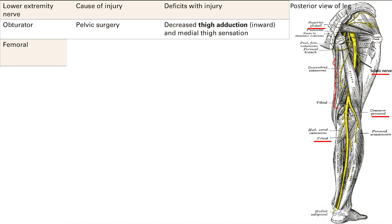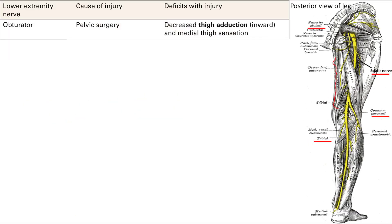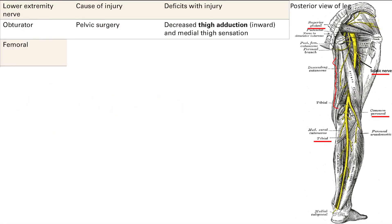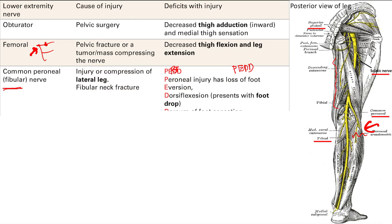The femoral nerve can be damaged by a pelvic fracture. Deficits: remember that big F — thigh flexion and knee extension are lost. Next is the common peroneal nerve — the key word is fibular. Injury comes from lateral injury to the leg or a fibular neck fracture. Deficits follow the mnemonic PEDD: foot eversion, dorsiflexion, and dorsum of the foot sensation are all lost.